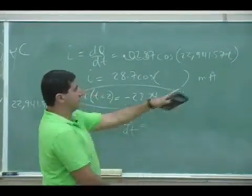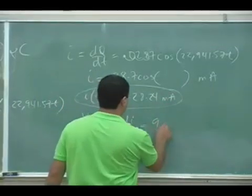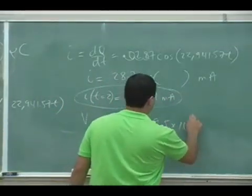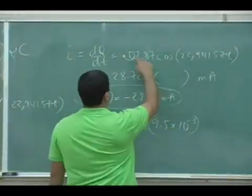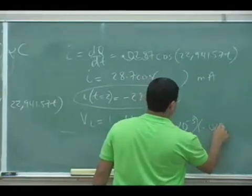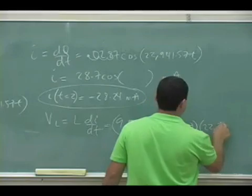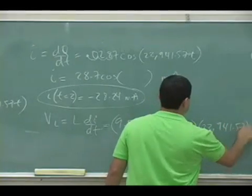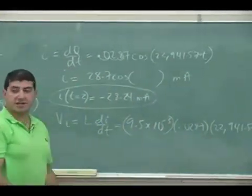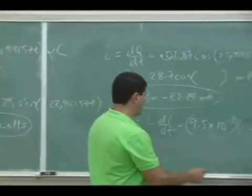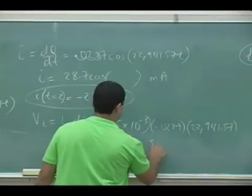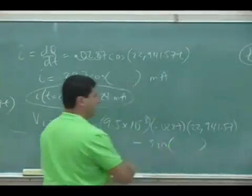And the L is 9.5 millihenries. And then the derivative of this, you get 0.0287. And then another 22,000 comes out. And then now the derivative of the cosine is negative sine. So I have to have a negative sign of that thing.